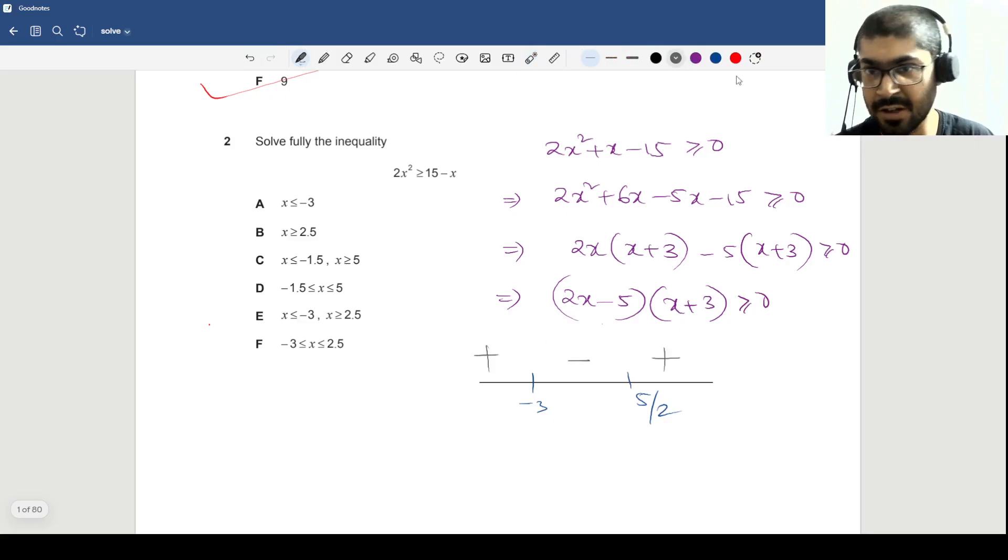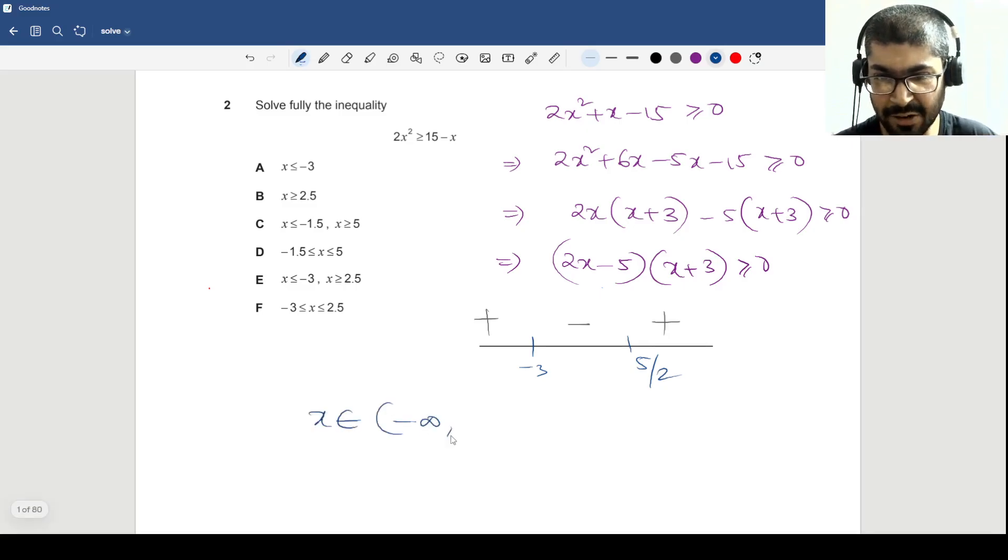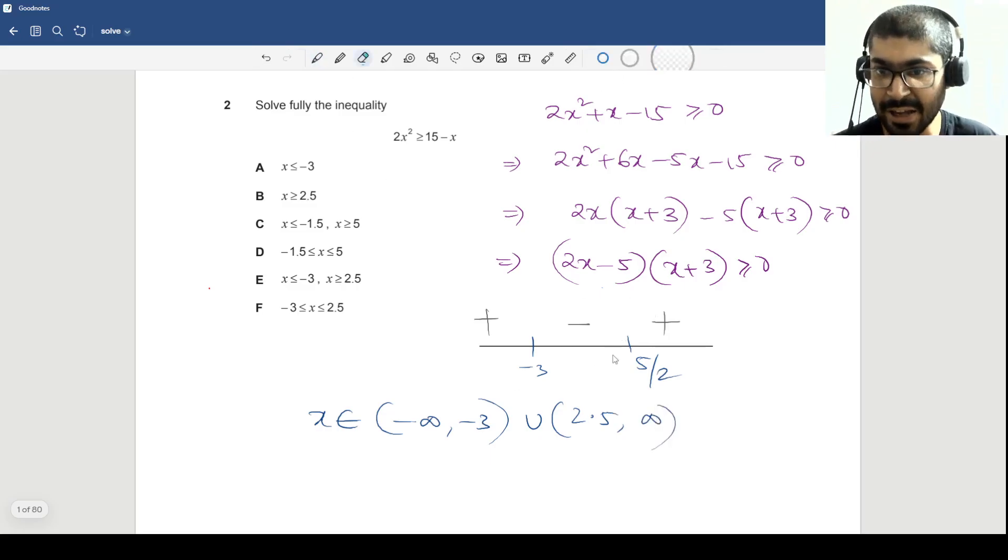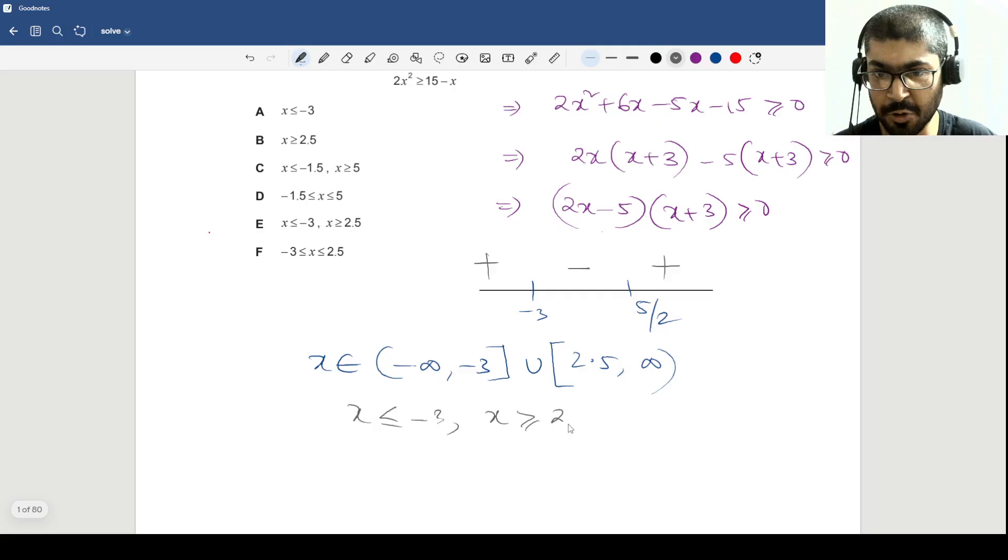So if you put 0 here, I will get -5 plus 3 -15 which is negative. So this region will be negative. These two will be the positive regions. So clearly to get the desired answer or to get a positive answer, I will have x belongs to (-∞, -3] union [2.5, ∞). Now this has the equality, greater than equals to, so these will be closed. These were not open brackets. These will be closed brackets.